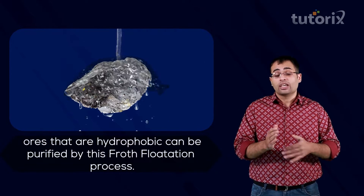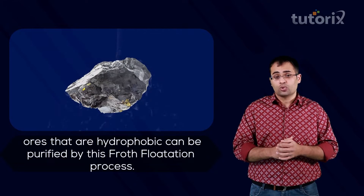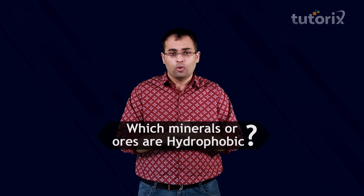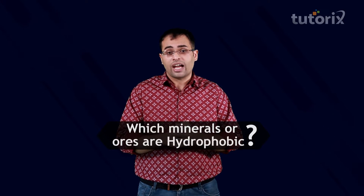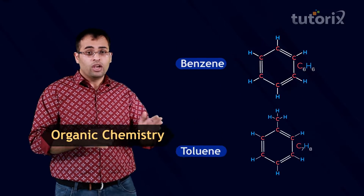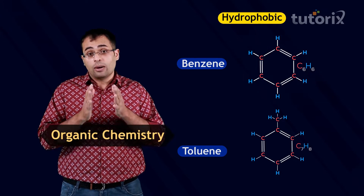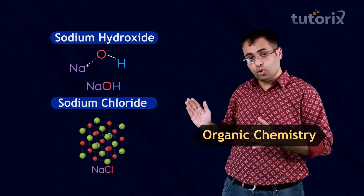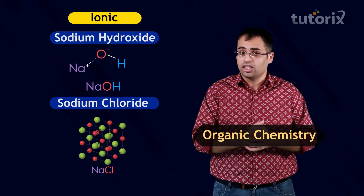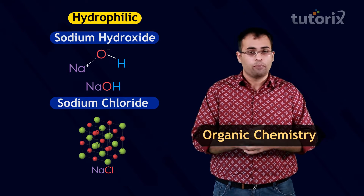After discussing this whole process, we can make one basic conclusion: ores which are hydrophobic can be separated from gangue particles using the froth flotation process. Another question arises — which ores are hydrophobic? To answer this, we go into organic chemistry, where compounds like benzene and toluene, which contain predominantly covalent bonds, are nonpolar and hence hydrophobic, whereas compounds like sodium hydroxide and sodium chloride, which have predominantly ionic bonds, are hydrophilic and polar.